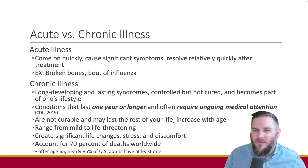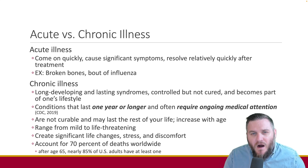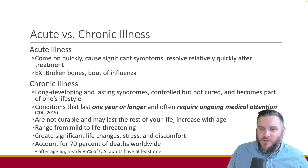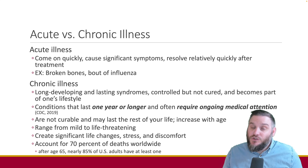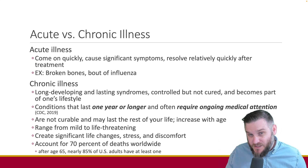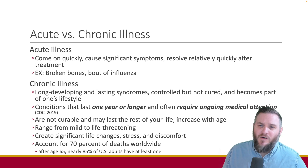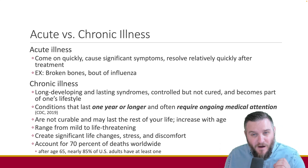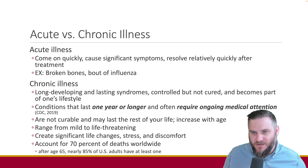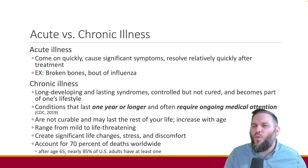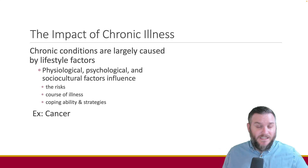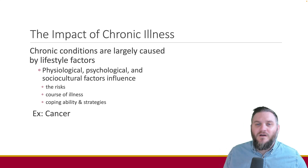On the other hand, chronic illnesses are more like a marathon. By definition, they are conditions that stick around for a year or more and often require ongoing medical treatment. They can range from mild to life-threatening and may accompany us throughout our lives. They're also more common as we age — in fact, over the age of 65, 85 percent of U.S. adults have at least one chronic illness. But remember, these conditions are just one part of our overall health story.